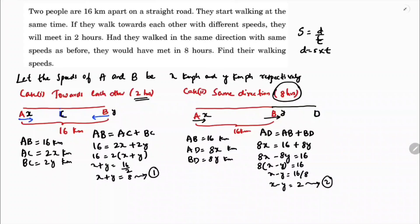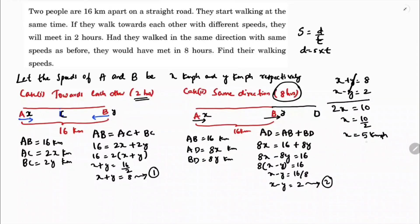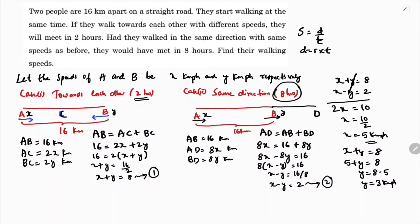Now we simplify equations 1 and 2. x plus y equals 8 and x minus y equals 2. Adding them, y cancels: 2x equals 10, so x equals 5 km per hour. Substituting back: 5 plus y equals 8, so y equals 3 km per hour.